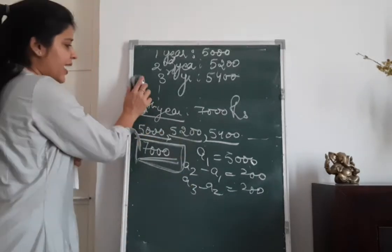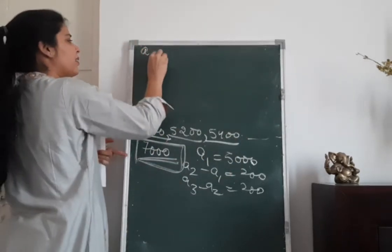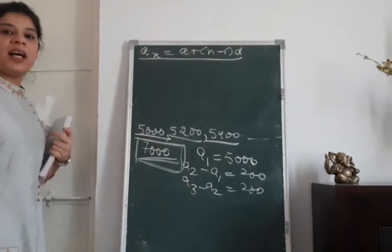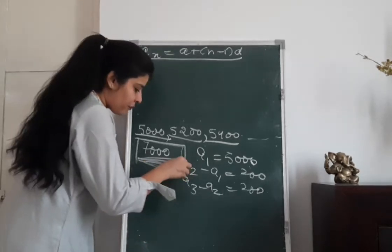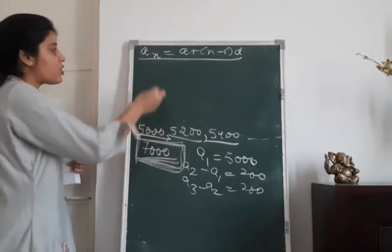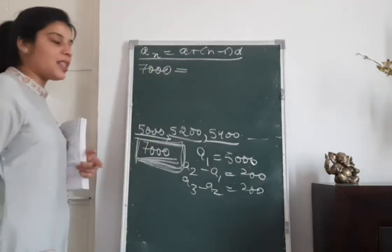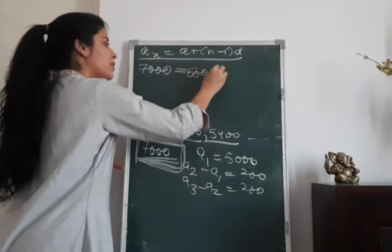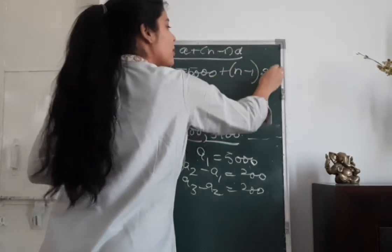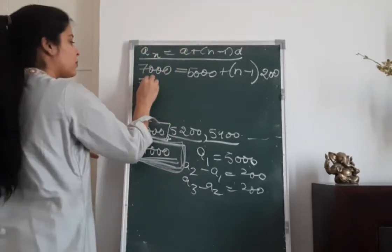Using the formula: An = A + (n−1) × D. The nth term is 7,000, the first term A is 5,000, and D is 200. So we write: 7,000 = 5,000 + (n−1) × 200.